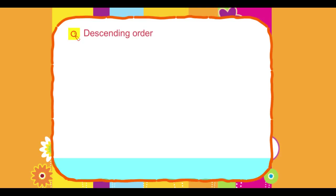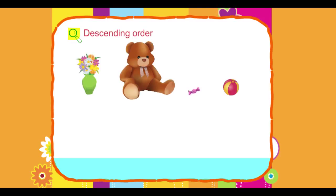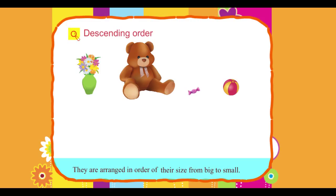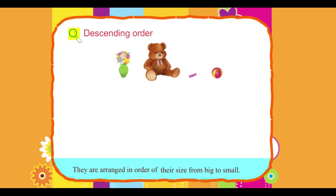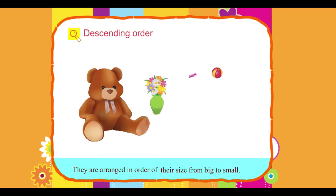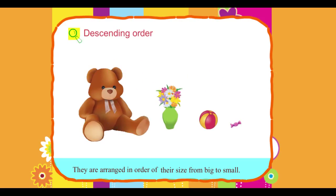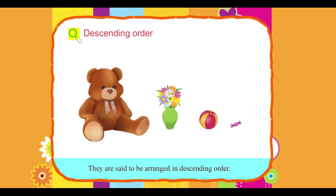Descending order. Look at the given pictures. They are arranged in order of their size from big to small. They are said to be arranged in descending order.